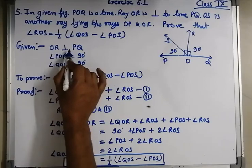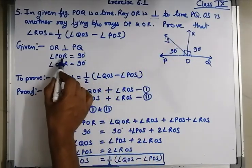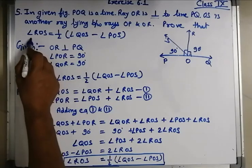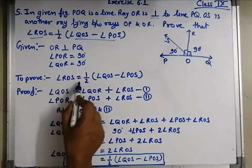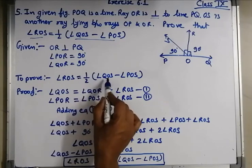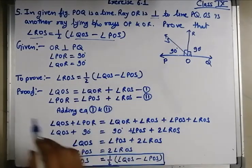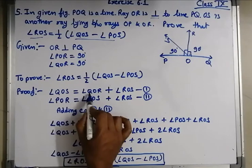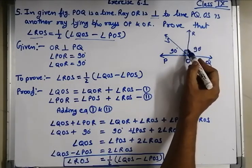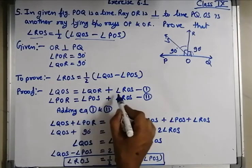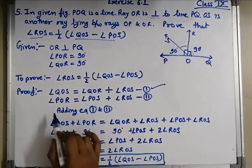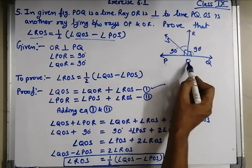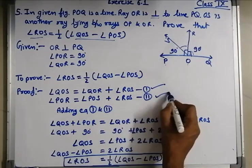Given: OR is perpendicular to PQ. So angle POR is equal to 90 and angle QOR is 90, as it is perpendicular. To prove: angle ROS equals one upon two of (angle QOS minus angle POS). Proof — angle QOS equals angle QOR plus ROS. This is equation number 1. Angle POR equals POS plus ROS. This is equation number 2.